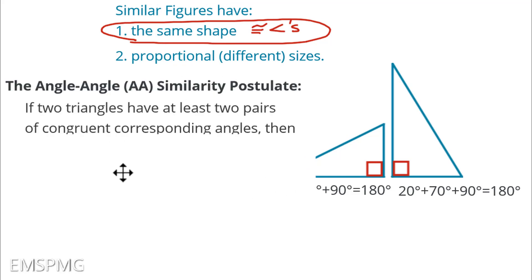The angle angle AA similarity postulate says if two triangles have at least two pairs of congruent corresponding angles, then they are similar triangles. Now you may be wondering why do they need to have at least two? Why isn't it just all three? Well what this enables us to do is kind of skip a step.